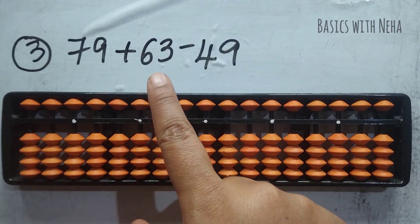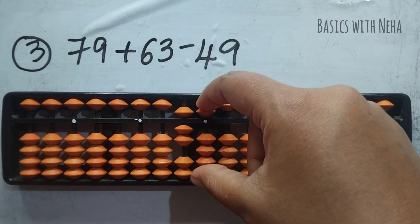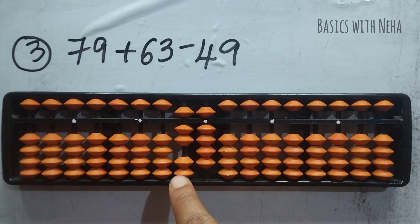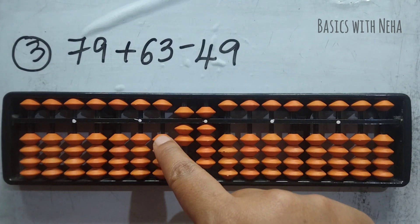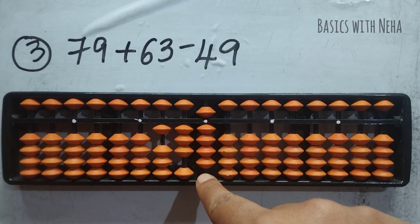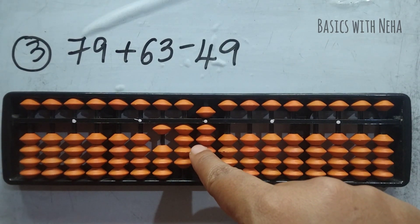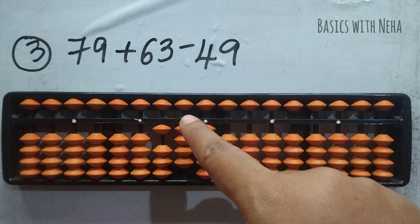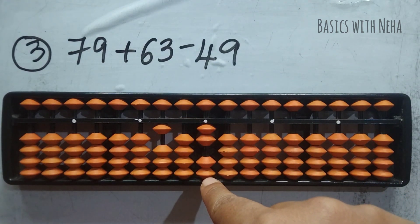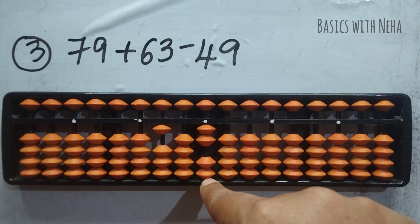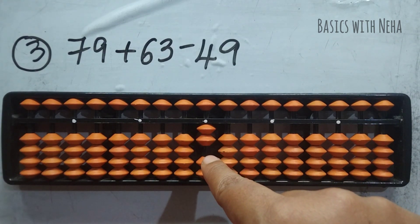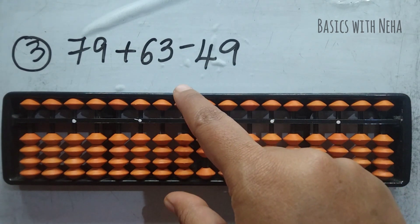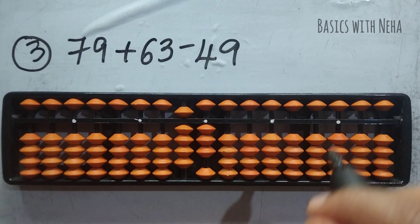Third question: 79 plus 63 minus 49. Take 79. Add 63 — to add 6, beads are not available; use the big friends formula: plus 10 minus 4. Minus 4 not directly available, so use the combination formula: plus 10 minus 5 plus 1. Now add 3 — beads not available; use the big friends formula: plus 10 minus 7. Now minus 49 — minus 4 directly. To minus 9, beads are not available; use the big friends formula: minus 10 plus 1. Minus 10 not available here, so jump this rod and do minus 10 on the next rod, come back to ones place and add 1. Add everything in the jumped rod. My answer is 93.